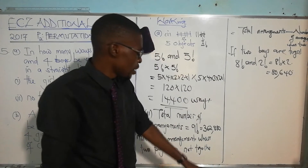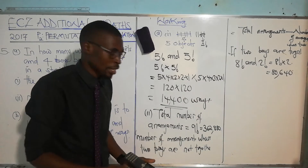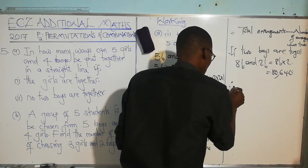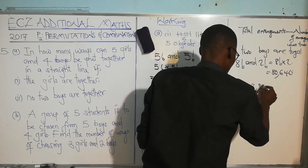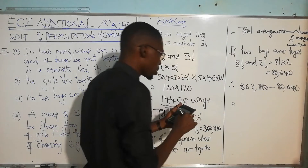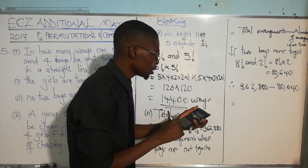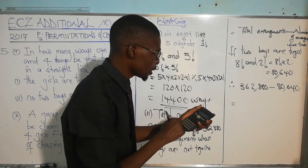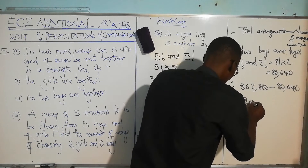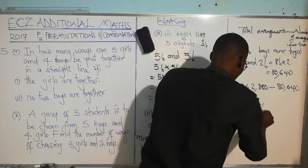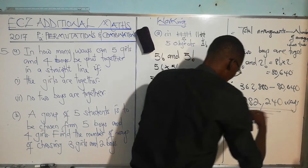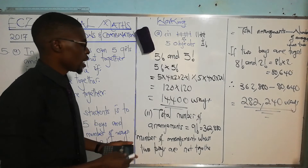Since 80,640 is the number of arrangements where two boys are together, the arrangements where no two boys are together = 362,880 − 80,640 = 282,240. This is the number of ways where the two boys are not seated together.